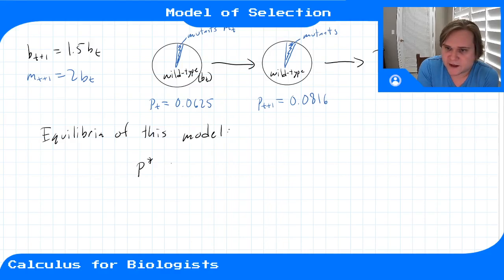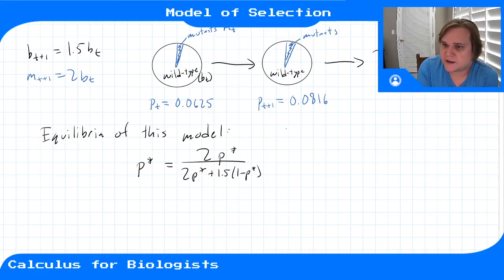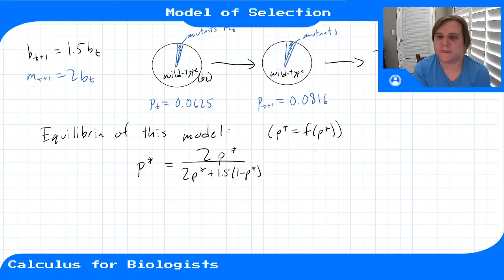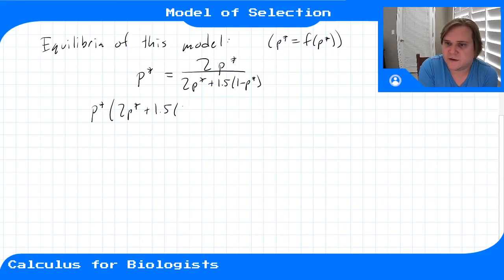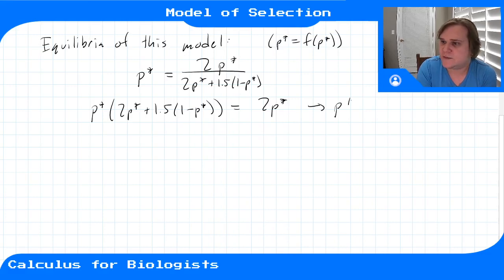We're looking for where the input is the same as the output — where p* equals 2p* divided by (2p* + 1.5(1 - p*)). This is just p* = f(p*). So if I do some algebra, I'll move the denominator over to the left: p*(2p* + 1.5(1 - p*)) = 2p*. Right away I can pick off one equilibrium point: p* = 0. When p* is 0, the right-hand side is 0 and the left-hand side is 0, so p* is a factor on both sides.